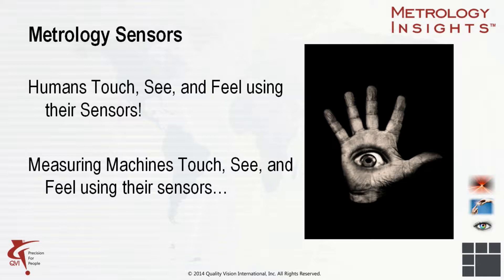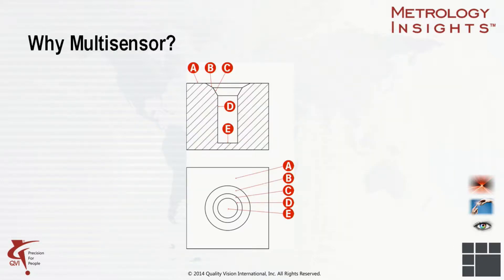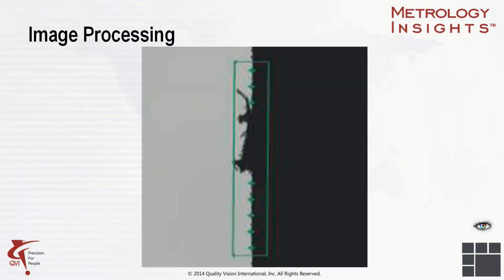Think about how you interact with a manufactured part — you touch, see, and feel using sensors. Now think about how an automatic measuring machine must interact with a part. It's the same. The measuring machine uses a combination of vision and touch sensors to evaluate a part. Multisensor systems allow you to use best practices to measure every feature of a part. Surface A, Chamfer B, Counterbore C, Sidewall D, and Bottom Surface E each have different measurement needs. By selecting the best available sensor for the measurement at hand, you can measure faster and with a lower uncertainty than using a single sensor that may not be optimal. No compromises, better accuracy, maximize capability.